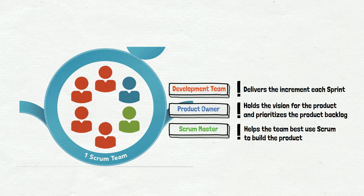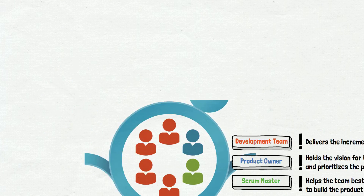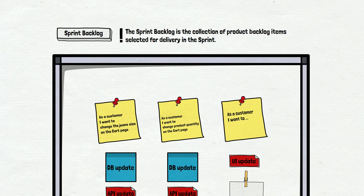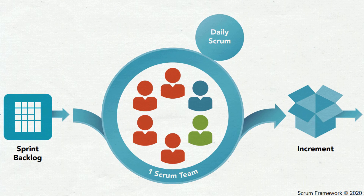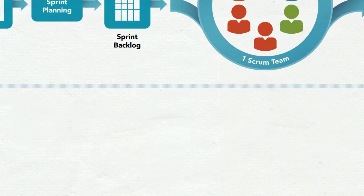That's all we wanted to mention about the team. The last thing the team did is define the sprint backlog. Let's check on the schema what happens next. The next ten days will look pretty much the same from the team's perspective — each member of the development team does their magic. We can see two circles: the big one with the team in it, and the small one called daily Scrum. Let's check what it is.